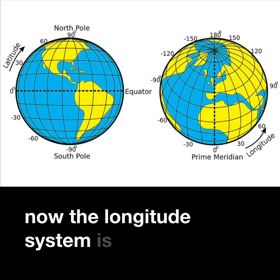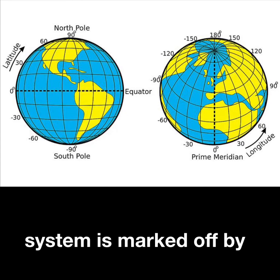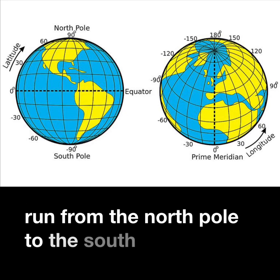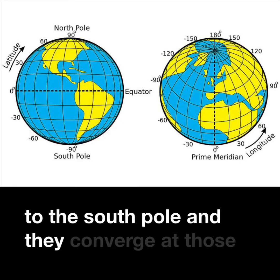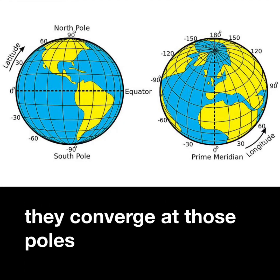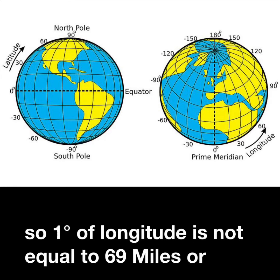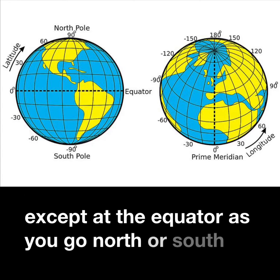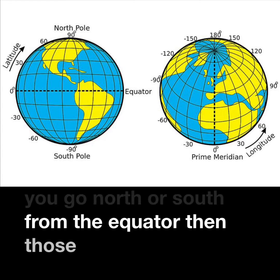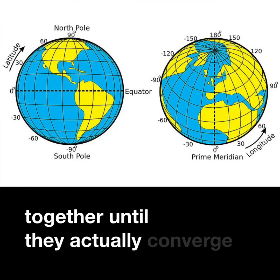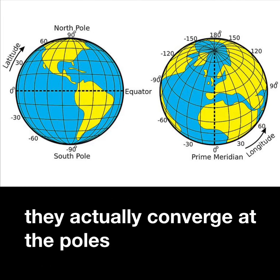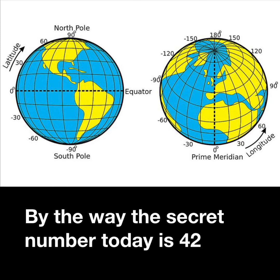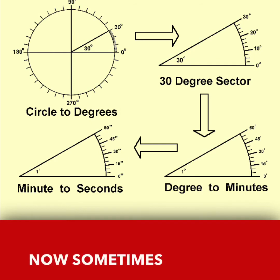The longitude system is marked off by meridians — lines that run from the north pole to the south pole and converge at the poles. So one degree of longitude is not equal to 69 miles or 111 kilometers except at the equator. As you go north or south, those meridians get closer and closer together until they converge at the poles.